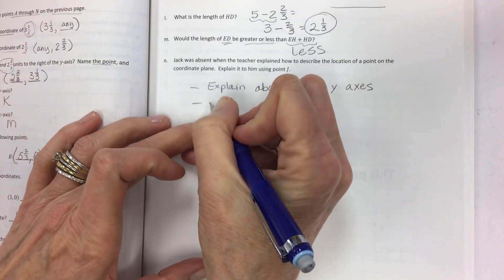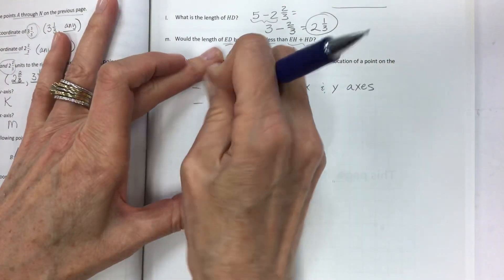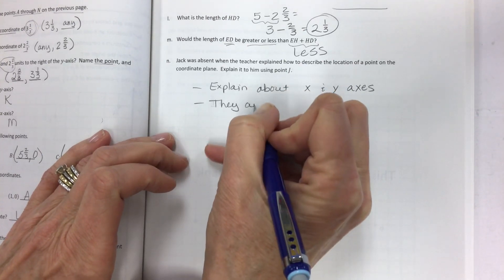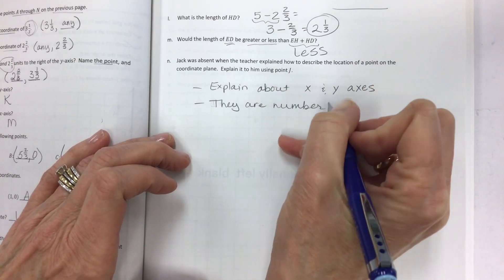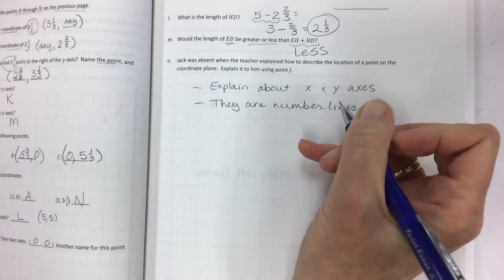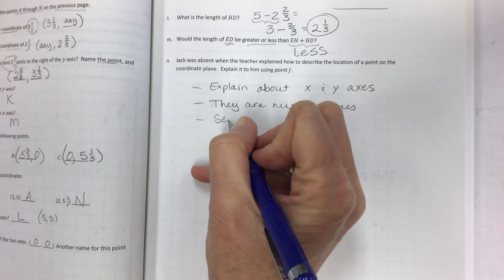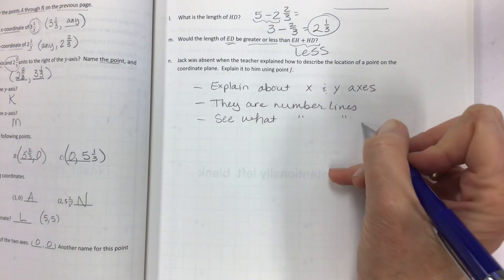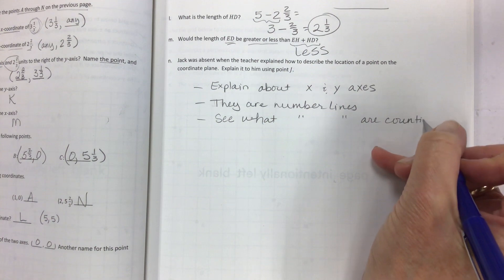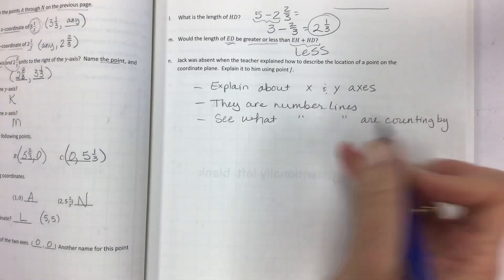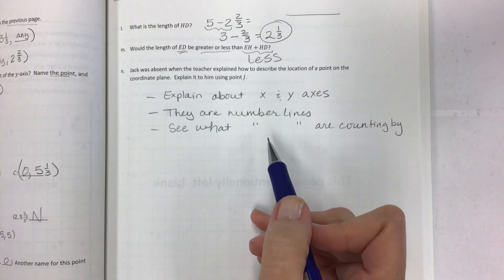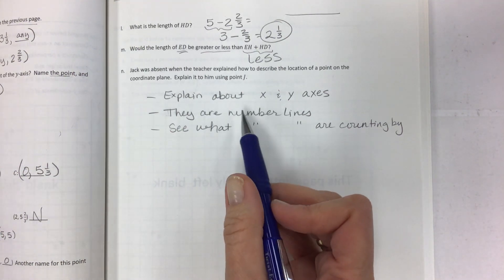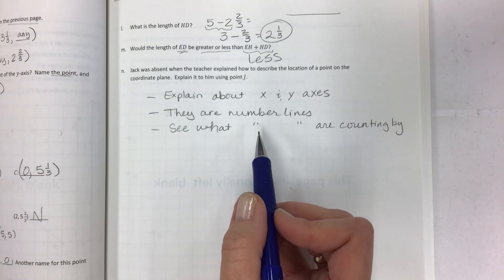They are number lines. See what it's counting by. See what the number lines are counting. So you have to really understand what it is. Is it thirds? Is it whole numbers only? Is it tenths, fifths, five, ten, fifteen, twenty? So every number line is going to be different. Every single one.